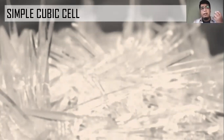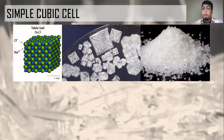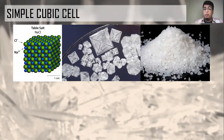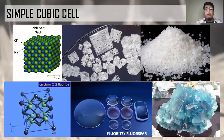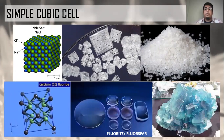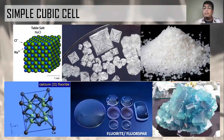Now let's look at real examples of these crystal systems. For simple cubic cells, we have table salt. As you can see in the figure, there is a microscopic and macroscopic view of its crystals. Another example is calcium fluoride — also called fluorite or fluorspar — which is used to make optical lenses for cameras, microscopes, and telescopes.